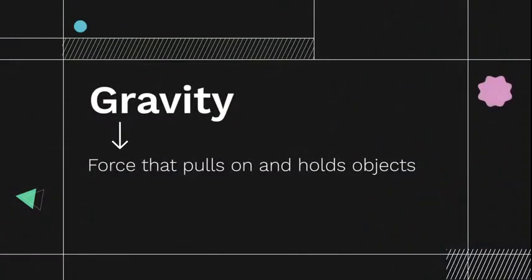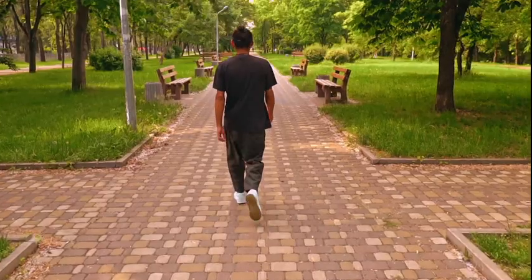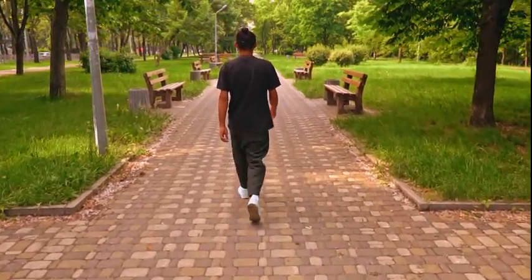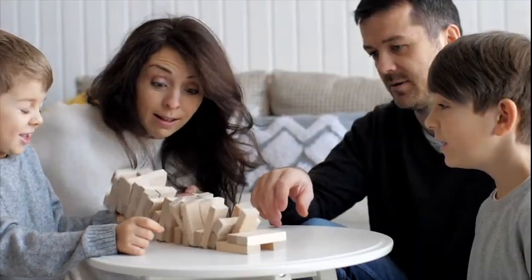Gravity is a force that pulls on and holds objects. While we can't always feel it, everything on Earth experiences gravity. That's because Earth itself has gravity. The force of Earth's gravity, also known as its gravitational pull, is what keeps us on the ground. It's also the reason why things fall.